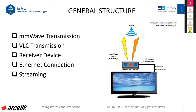Now let's look at the general structure for the TV application. There exists a transmitter for millimeter wave and VLC transmission, and a receiver. This receiver is connected to the 4K television with an Ethernet connection to make the TV receive video packages.